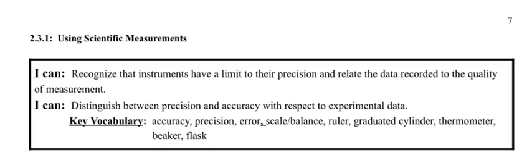In this section we're going to explain precision and accuracy and why it's important. We're also going to learn how to read a ruler and a graduated cylinder correctly, because that will increase precision if you know how to read it correctly. Our precision and accuracy is dependent on what equipment we are using. The objective is to recognize that instruments have a limit to their precision and relate data recorded to the quality of the measurement.